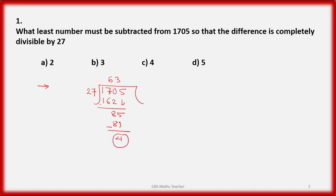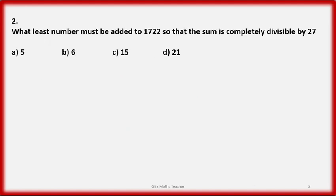Now, subtracting this remainder 4 from 1705 gives 1701, which is completely divisible by 27. That's why this remainder is the answer — option 4.